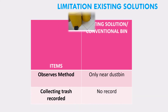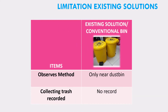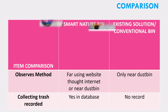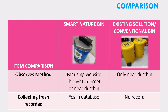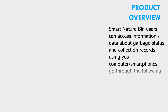Limitations of existing solutions: by using a conventional bin, we have to check the waste level in the bin manually, and there is no record of trash collecting. In comparison, with our product SmartNatureBin, we can monitor the waste level anytime and anywhere using a real-time system, and there will be a record of trash collecting in the database.